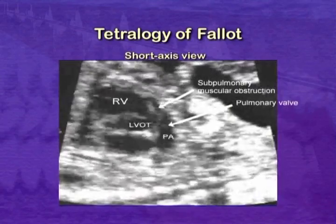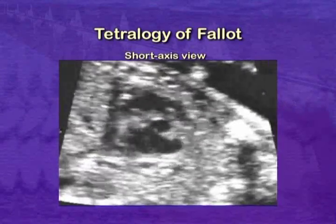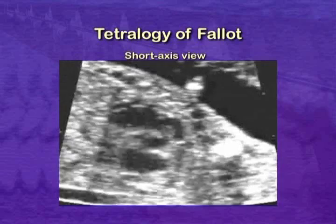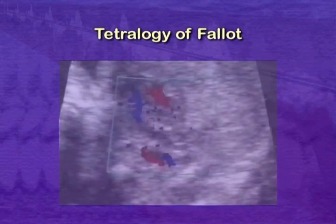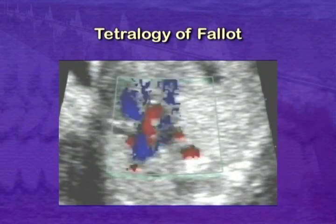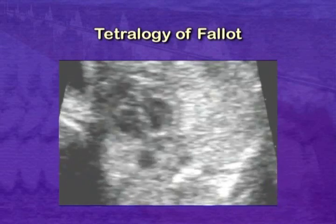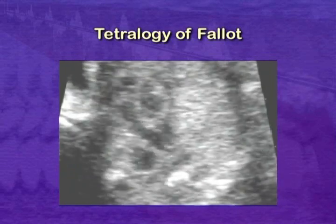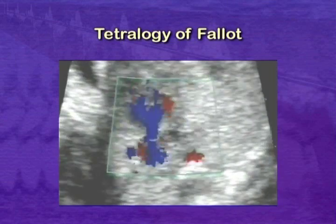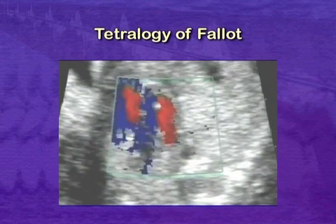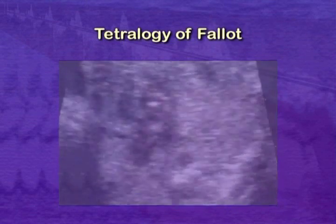In a classical example of Tetralogy of Fallot, there is muscular obstruction below the pulmonary valve and some narrowing of the valve itself, but forward flow is maintained through the valve. Doppler velocity across the pulmonary valve is normal or only mildly increased, and there is forward flow through the arterial duct.